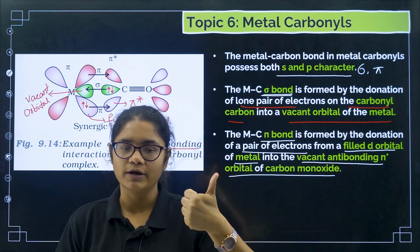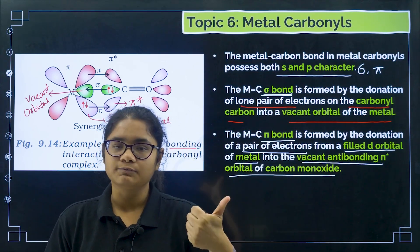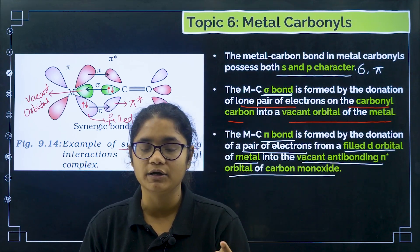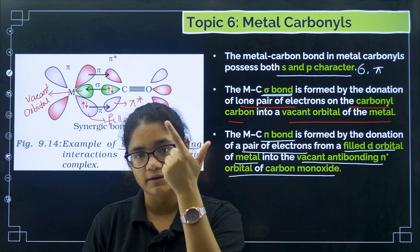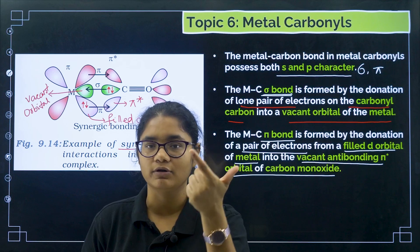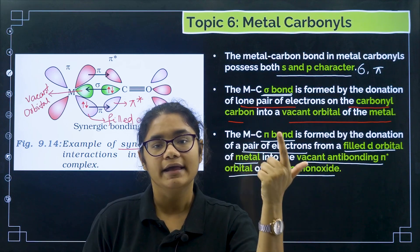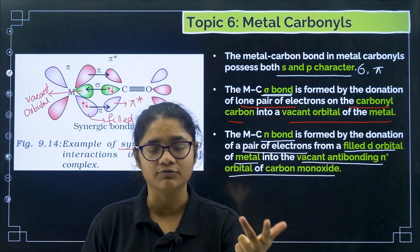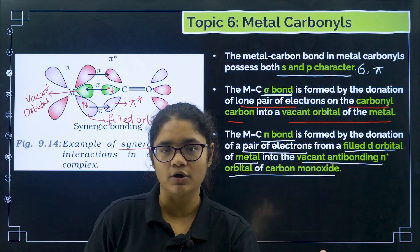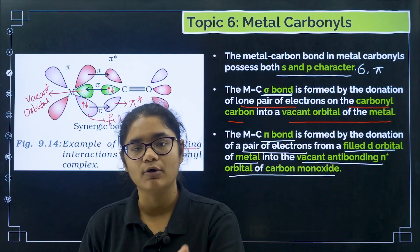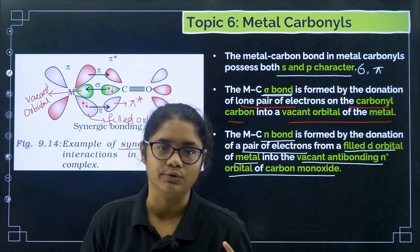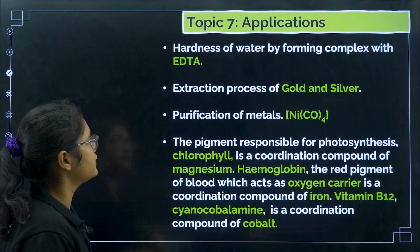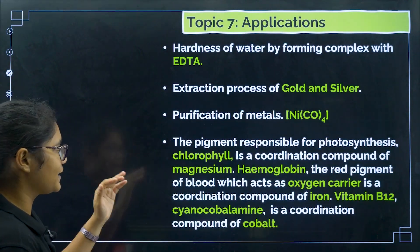To summarize metal carbonyls, remember three points: first, it has both sigma and pi bonds; second, the sigma bond is formed between the carbonyl carbon lone pair electrons and the empty orbitals of metal; third, the pi bond is formed from the filled d orbitals of metal to the empty anti-bonding π* orbital of CO.